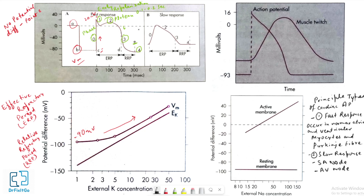Fast response may change to slow response under certain pathological conditions. For example, in coronary artery disease, a region of cardiac muscle is deprived of its normal blood supply. As a result, the potassium concentration in the interstitial fluid surrounding the affected muscle cells rises because potassium ions are lost from the inadequately perfused, or ischemic, cells. The action potential in some of these cells may then be converted from fast to slow response.